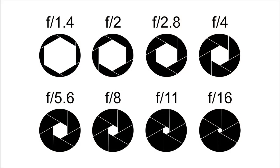A standard set of f-stop numbers can look like this. At f1.4, the aperture is at its widest possible position, meaning that the aperture is fully open and allowing as much light as it can into the camera. You may need to use this in very low light situations or to capture a shallow depth of field. At f16, the aperture is at its smallest possible position and is almost closed, allowing very little light into the camera. This would be used in very bright conditions and would give you a very large depth of field.